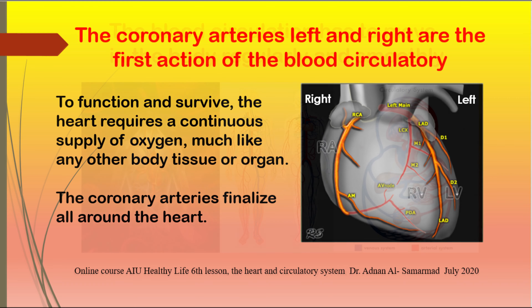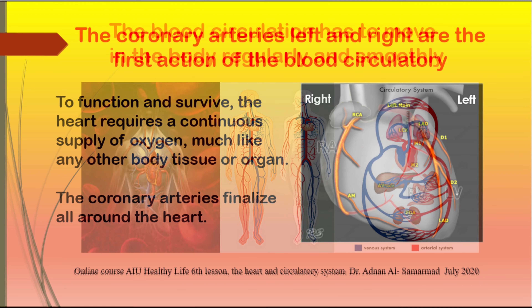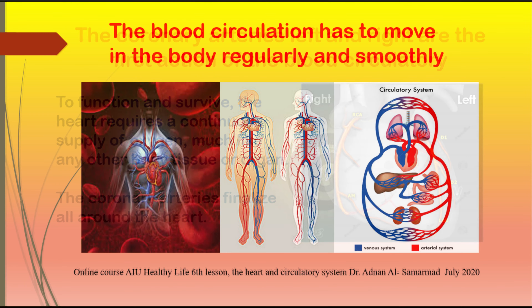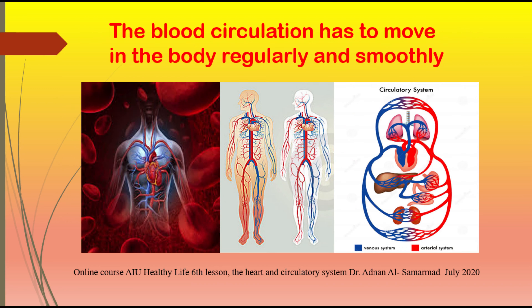The heart receives the best saturated blood supply in the body through contraction and relaxation. The blood circulation moves in the body regularly and smoothly. All of the blood can circulate in the body within a minute, closing the cycle — transporting oxygen, nutrients, distributing heat, bringing waste from the cells to the kidneys, and supporting metabolism.